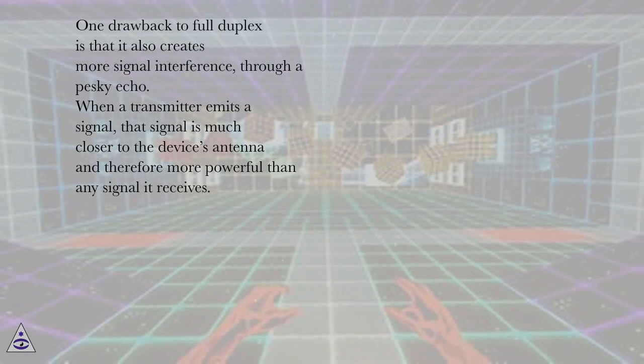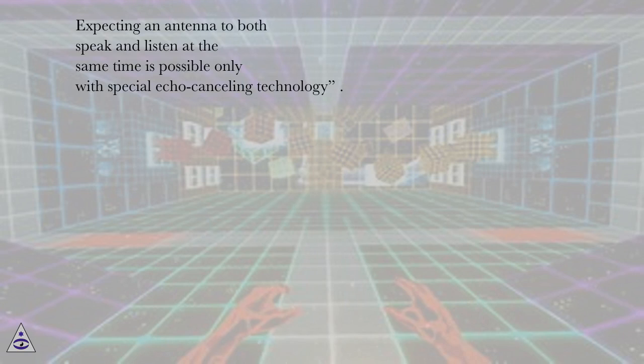One drawback to full duplex is that it also creates more signal interference, through a pesky echo. When a transmitter emits a signal, that signal is much closer to the device's antenna and therefore more powerful than any signal it receives. Expecting an antenna to both speak and listen at the same time is possible only with special echo cancelling technology.